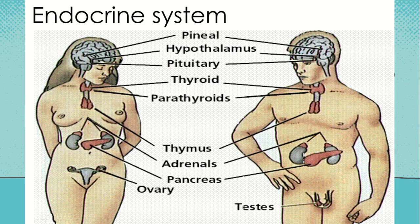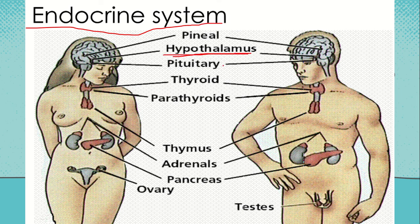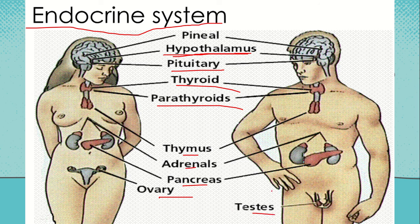Those are the glands and different hormones that make up the endocrine system. We have the pineal gland located in the brain, hypothalamus, and pituitary. The hypothalamus regulates the anterior pituitary hormones — it tells the pituitary when to release hormones. We also have thyroid gland, parathyroid, thymus, adrenal, pancreas, ovary, and testes.